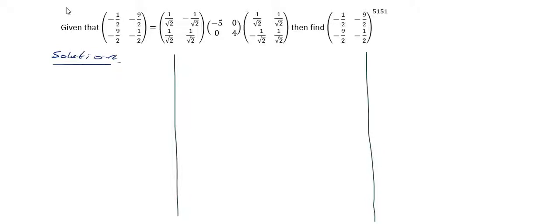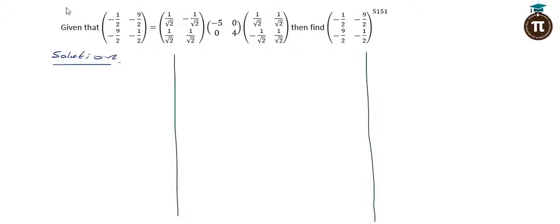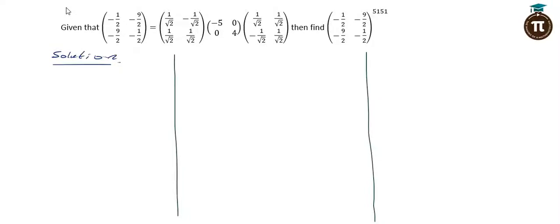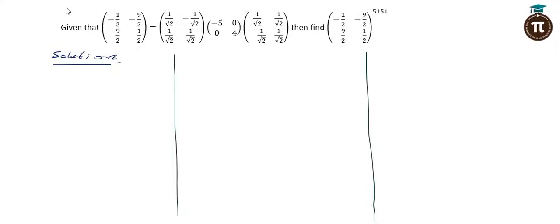Basically, we are given the 2x2 matrix: minus 1 over 2, minus 9 over 2, minus 9 over 2, minus 1 over 2 — to be equal to this multiplied by a diagonal matrix, multiplied by this. And we are assigned, when that same matrix is raised to the power 5151.